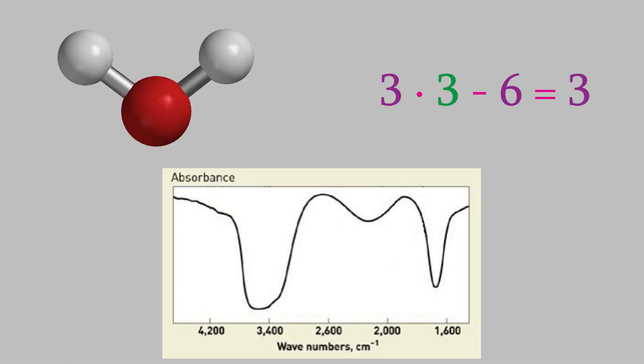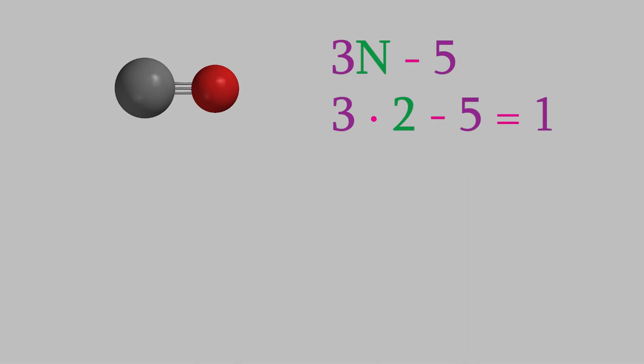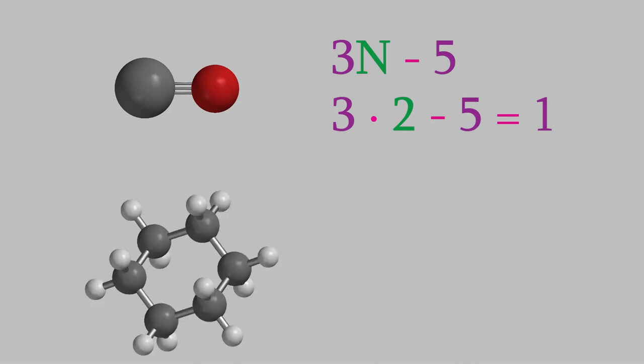Now suppose we have a sample of carbon monoxide. Carbon monoxide is a linear molecule with just two atoms, so to get the number of vibrations we use the linear formula. The number of vibrations is 3 times 2 minus 5, which gives us 1. So there's just one vibration possible for carbon monoxide. Finally, suppose we have a sample of cyclohexane. Cyclohexane has a formula of C₆H₁₂, so there are 18 atoms total. That means there are 3 times 18 minus 6 possible vibrations, for a total of 48.